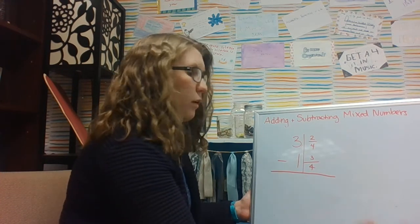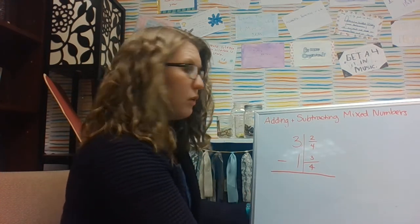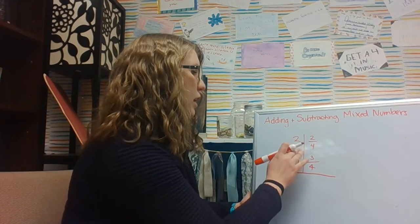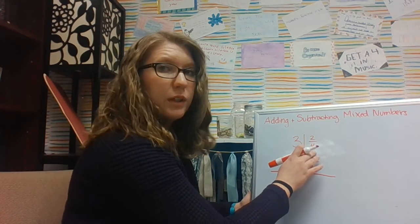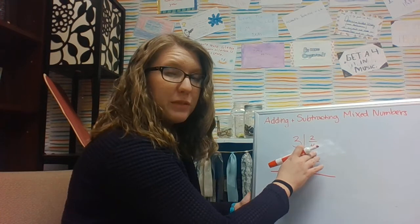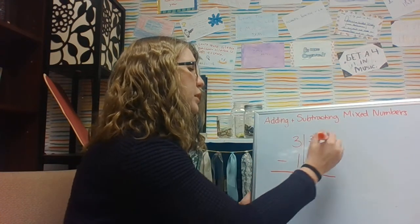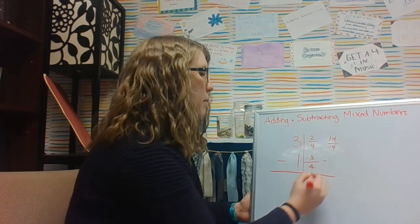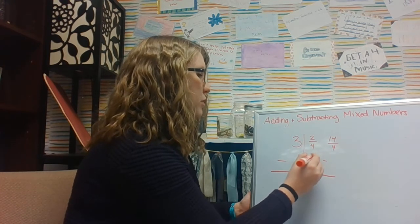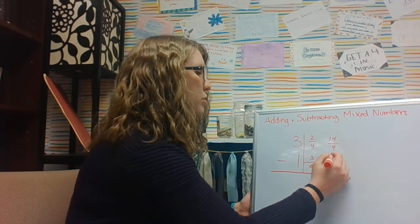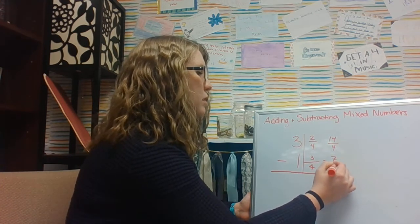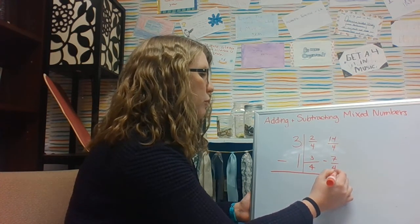So now I could go ahead and turn this into improper fractions. So I can think I have 3 groups of 4. I have 3 groups of 4/4. So I have 3 times 4, which equals 12, plus 2 is 14/4, minus 4 times 1 is 4, plus 3 is 7/4.